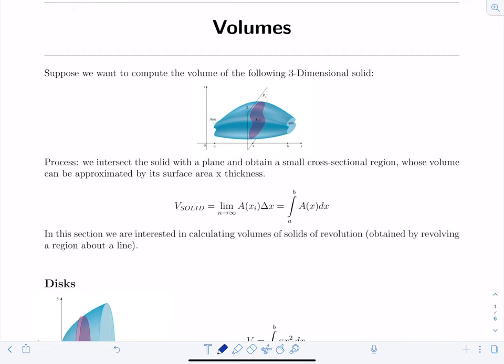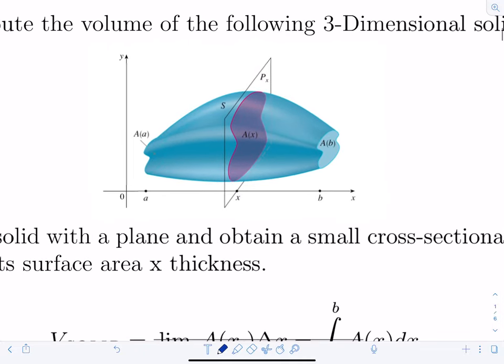The process is: we intersect the solid with a plane and obtain a small cross-sectional region — basically a slice of the solid, like a bread slicer. We approximate the volume by taking the surface area of that slice, A(x), and multiplying by the thickness of the slice. A(x) is a two-dimensional quantity, and the thickness adds the third dimension.